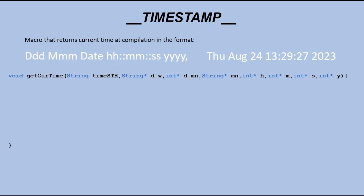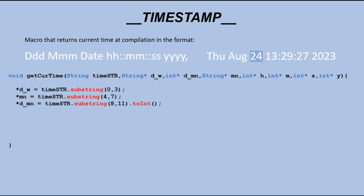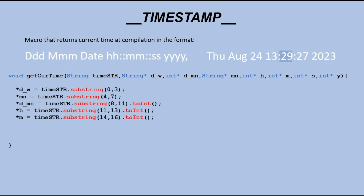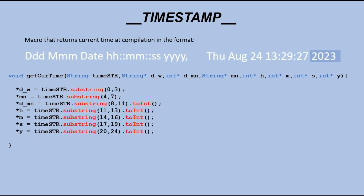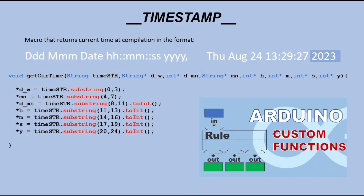So we extract day of the week, month, day of the month, hour, minutes, seconds, and year. If you are not entirely sure how memory pointers work, I have recently made a detailed video that explains it — check it out.